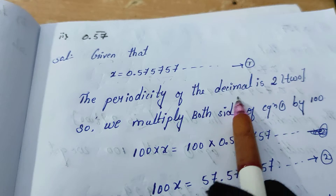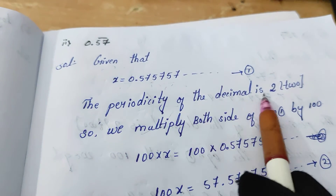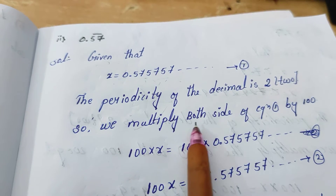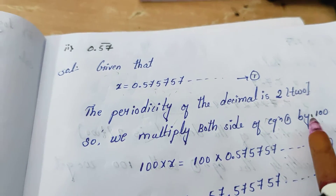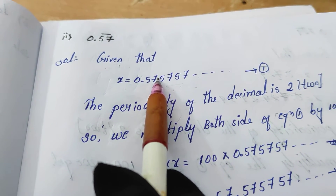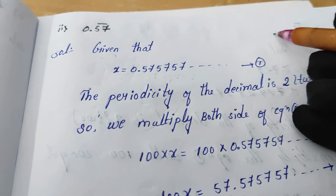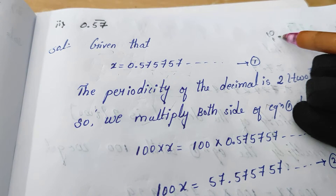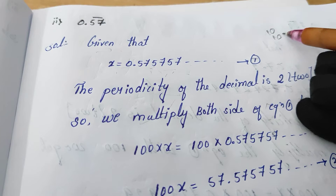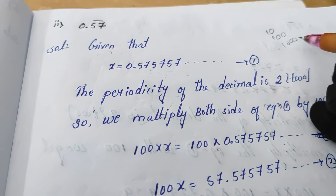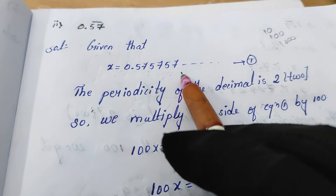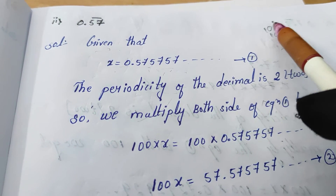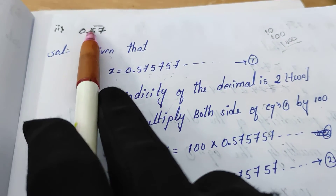The periodicity of the decimal is 2 because the repeated numbers are 5 and 7 — two digits. That's why we are multiplying both sides of equation 1 by 100. When 1 number is repeated we multiply by 10; when 2 numbers are repeated we multiply by 100; when 3 numbers are repeated, we multiply by 1000.